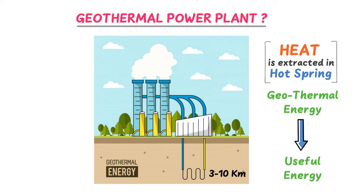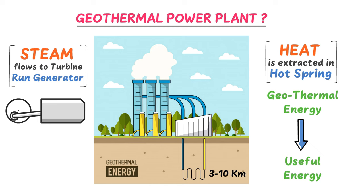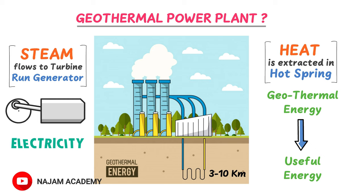For example, in a geothermal power plant, the steam flows directly to a turbine to drive a generator that produces electricity. Once electricity is generated this way, it can then be converted to other forms of energy.